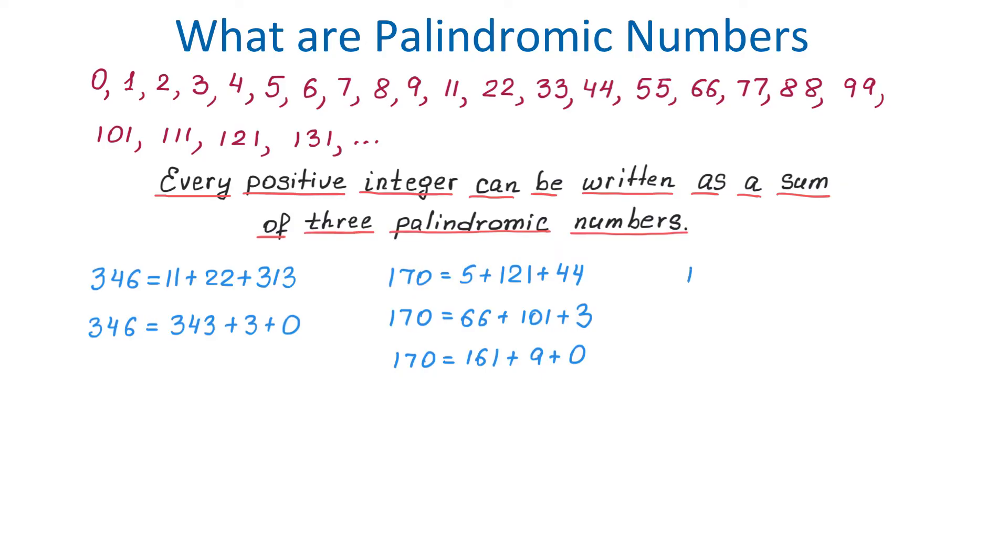Number 12 can be represented as 11 plus 1 plus 0, or it could be represented as 5 plus 5 plus 2. And these are just two ways we can represent number 12 using palindromic numbers.